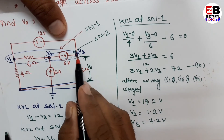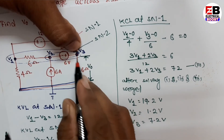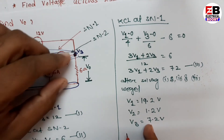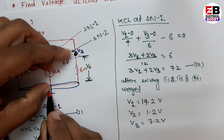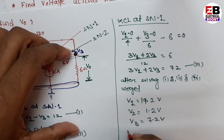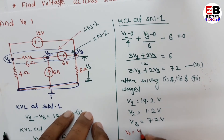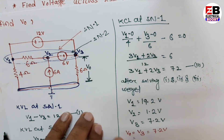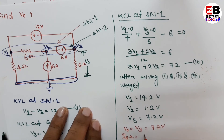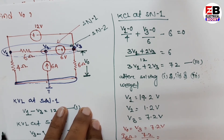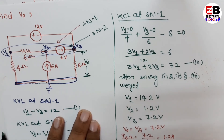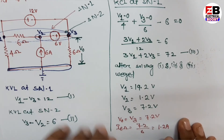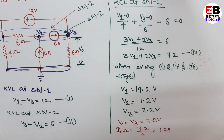Our question asks us to find V0, which is the voltage drop across the 6 ohm resistor. Since V0 is measured from node 3 to the reference node, V0 equals V3 equals 7.2 volts. If we want the current through the 6 ohm resistor: I equals 7.2 divided by 6, which equals 1.2 amperes.